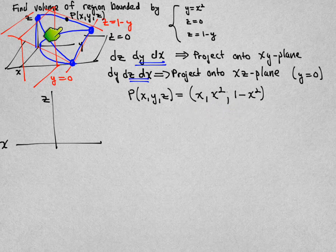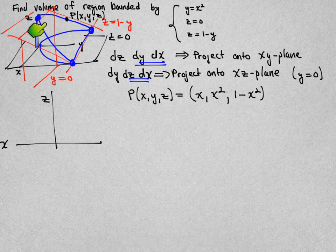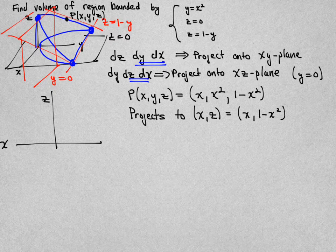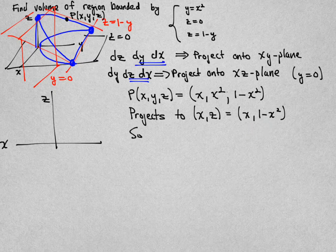When we project that point onto the xz-plane, we essentially are ignoring the y-coordinate and just looking at the x and the z-coordinates. So the projection of that point projects onto the point xz where the x-coordinate is x and the z-coordinate is one minus x-squared. And so what we're saying here is that the z-coordinate must satisfy this equation, z is equal to one minus x-squared.